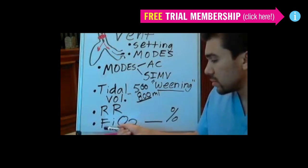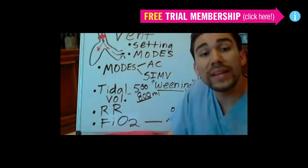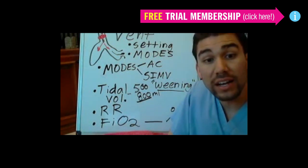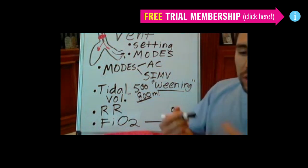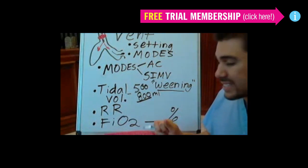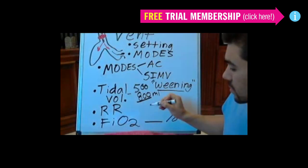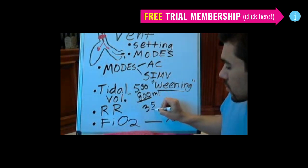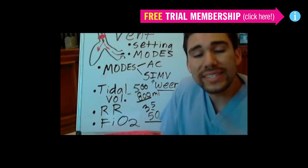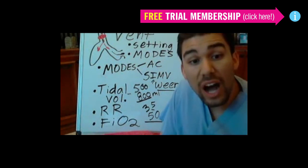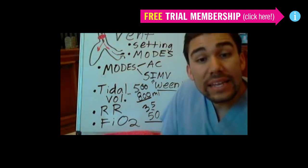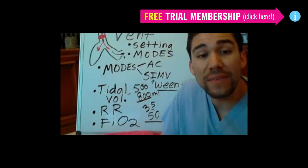Your FiO2 is the amount of oxygen that we're putting inside the ventilator itself to pump your patient's lungs up with air. Usual FiO2 is between 35% to 50%. If your patient is not compensating and not getting a lot of oxygen, we can bump it up to 75%, even close to 100% FiO2.